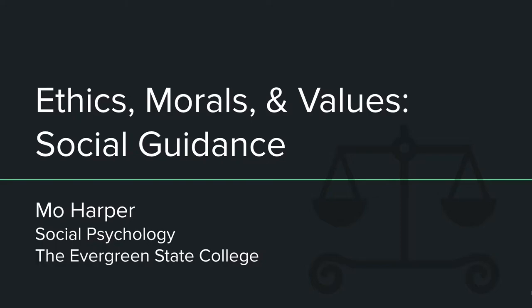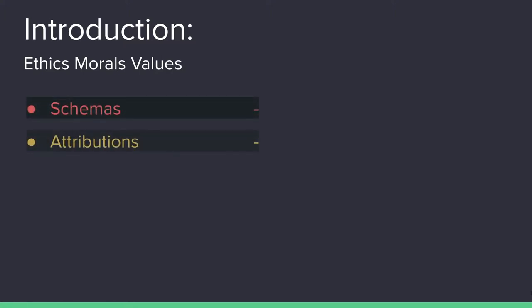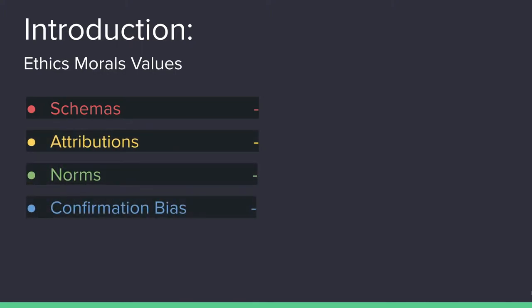Within the ethics, morals, and values of each and every individual lies the foundation of their interaction with the social world. By breaking down what ethics, morals, and values are, one can see how each fit into how people develop schemas, make attributions, set norms, feel confirmation biases, and act with altruism.